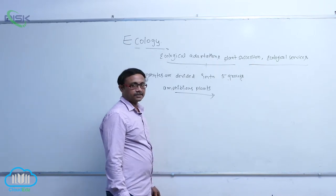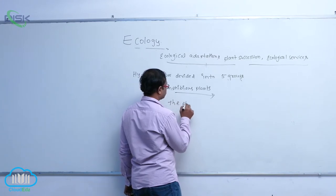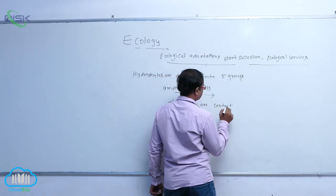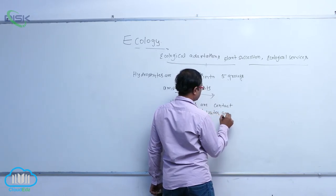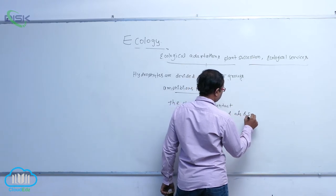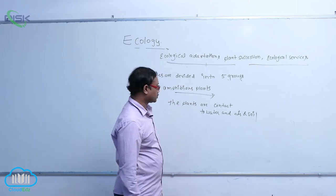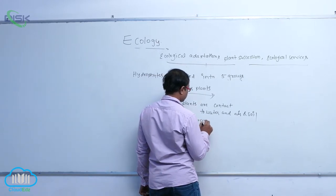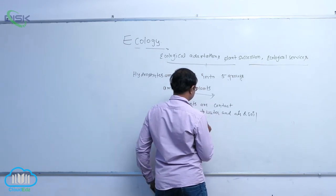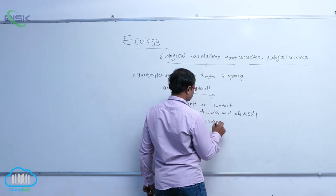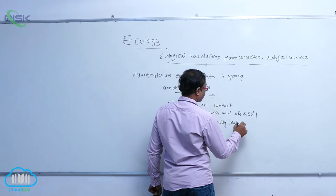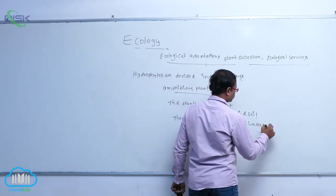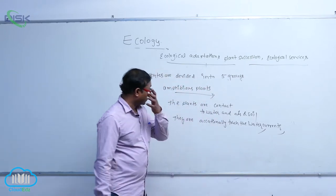They are known as amphibious plants. The plants contact to water and air or soil. They are occasionally touched the soil, occasionally touched that water. They are occasionally touched that water currents. So, they are known as amphibious plants.